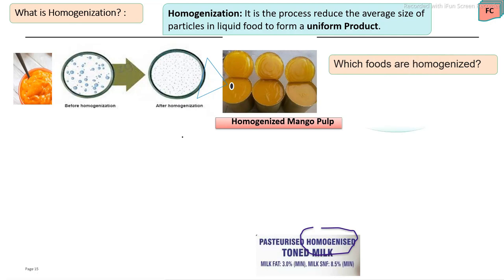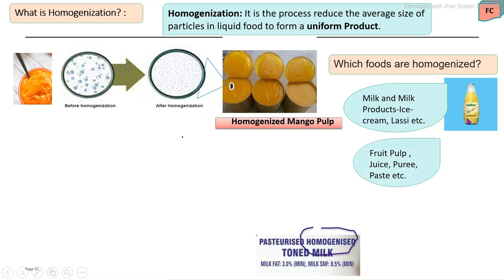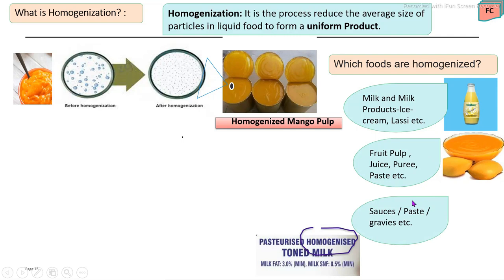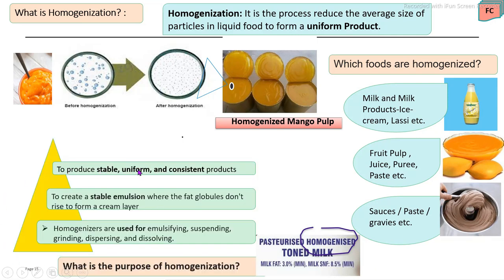Which foods are mostly homogenized? In the dairy industry, milk and milk products — toned milk, double toned milk, standardized milk — these are homogenized milks. Other flavored milk products also undergo homogenization. The second group is fruits and vegetables such as extracted pulp, juice, puree, and paste. Next, other thick-consistency products like sausage paste and gravies are also homogenized. The basic purpose is to produce a stable, uniform, and proper consistency final product — a stable emulsion. Homogenization is also important for emulsification, grinding, dispersing, and dissolving.